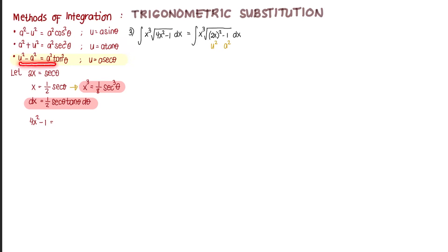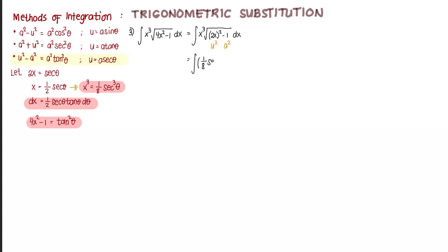For the radicand 4x squared minus 1, from the pattern u squared minus a squared equals a squared tangent squared theta, we derived in the previous video that 4x squared minus 1 is simply equal to tangent squared theta. Now we substitute: the integral becomes x cubed — which is one eighth secant cubed theta — times the square root of tangent squared theta, times dx.